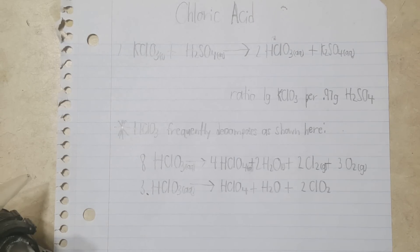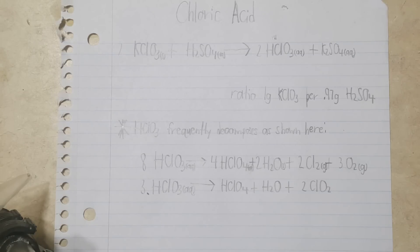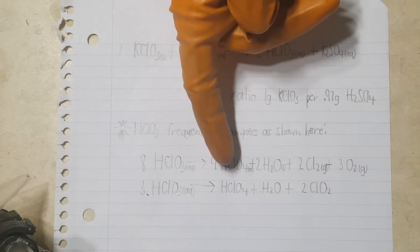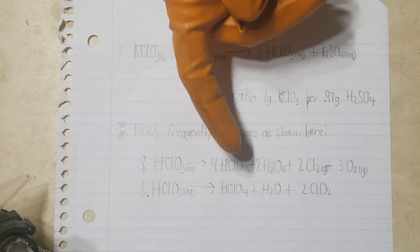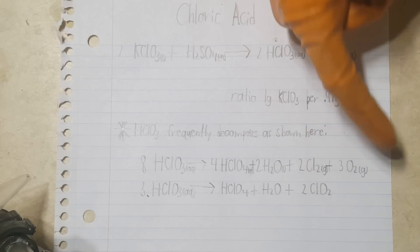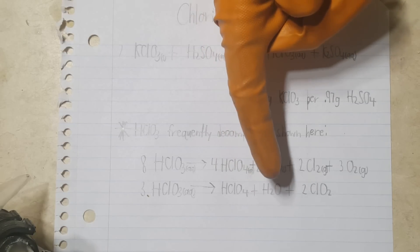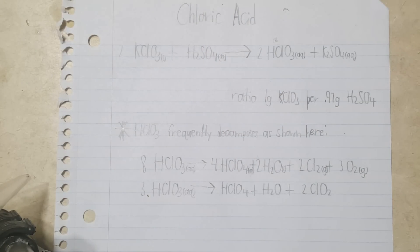Not all of the potassium chlorate is going to convert into chloric acid because chloric acid is really unstable — it frequently decomposes, so the concentration is not going to get terribly high. There are two possible ways it can decompose. The first involves forming perchloric acid, water, chlorine gas, and oxygen. The second involves making more perchloric acid, water, and chlorine dioxide. Chlorine dioxide is a really unstable explosive gas, very prone to explosive decomposition.